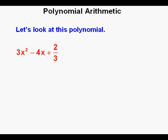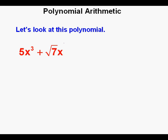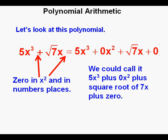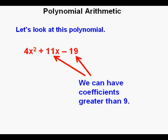Let's look at this polynomial: 3x² - 4x + 2/3. We couldn't do this with whole numbers because of the minus sign and the fraction. Now let's look at this polynomial: 5x³ + √7x. Here we have a 0 in the x² place and also a 0 in the numbers place. Let's look at this polynomial: 4x² + 11x - 19. A polynomial can have coefficients greater than 9. With a number, any coefficient greater than 9 must be carried over. There is no carrying over with polynomials.